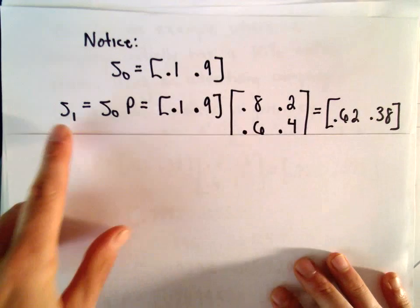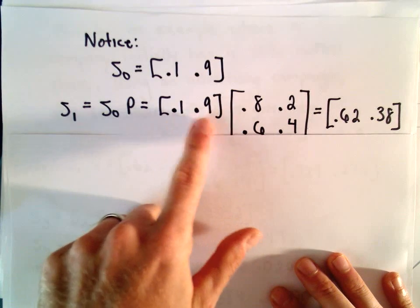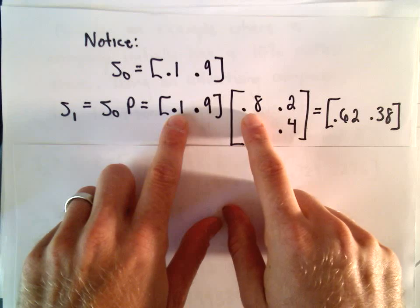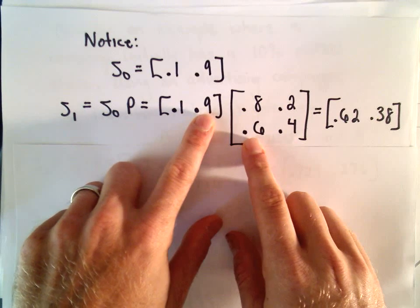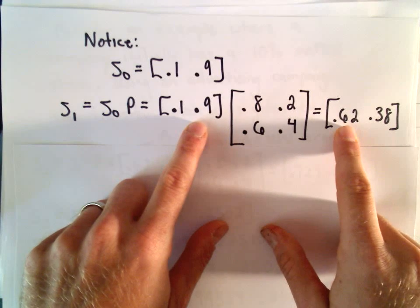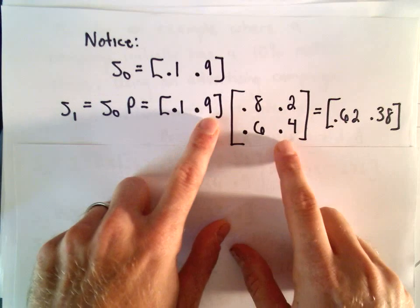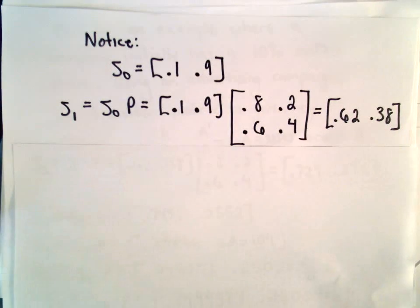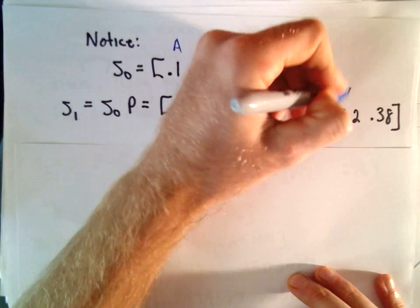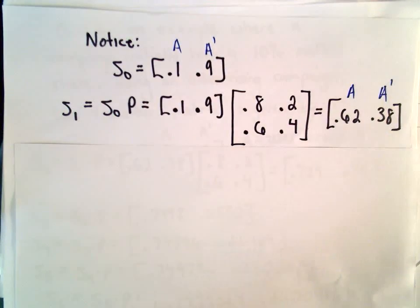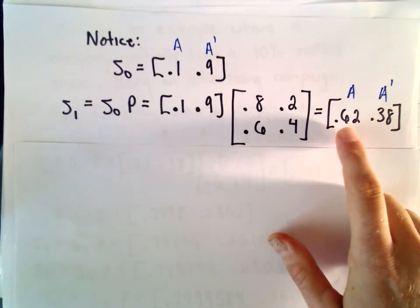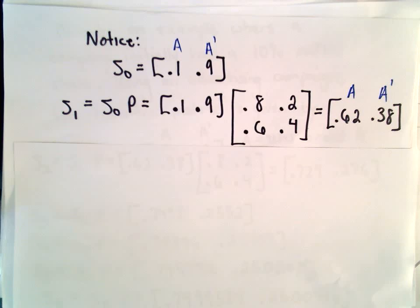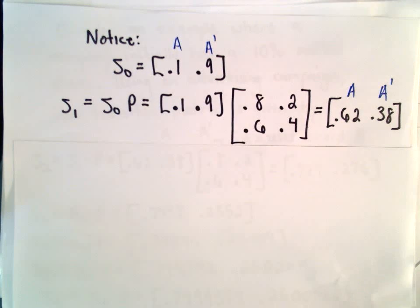If we look at what happens one month later, we take the initial market share and multiply it by that transition matrix. We would take 0.1 multiplied by 0.8, plus 0.9 multiplied by 0.6, which gives us 0.62. Then we would take 0.1 multiplied by 0.2, plus 0.9 multiplied by 0.4, and get 0.38. So one month later under this advertising campaign, brand A has 62% of the market and the competitors only have 38%. Pretty good little advertising campaign to jump from 10% of the market to 62% of the market.